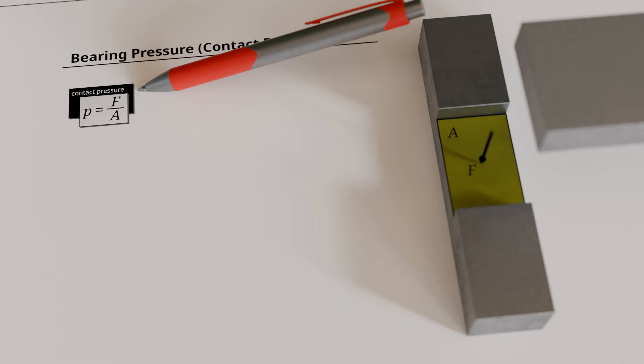In contrast to compressive stress which acts inside a component, bearing pressure acts on the contact surface between two components. It is therefore denoted by the letter P rather than by the Greek letter sigma, which is used for internal stress. For this reason, the contact area is usually denoted by the capital letter A rather than by the symbol S used for a cross-sectional area.